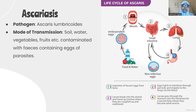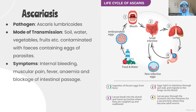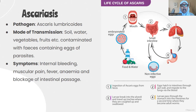Symptoms include GI tract issues such as internal bleeding, muscle pain, fever, anemia, constipation, and blockage of the intestinal passage. Presence of live worms in fecal matter is also an indication of ascariasis. Pulmonary disorders may also occur, including pneumonia, coughing, sneezing, vomiting, fever, weight loss, and loss of appetite.